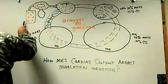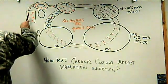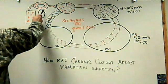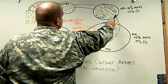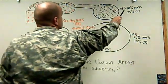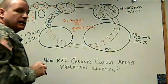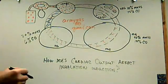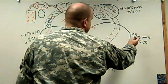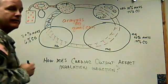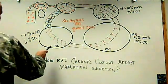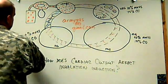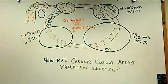Here you can see you have a vaporizer with gas in it, a circle system, the lungs, the vessel-rich group which composes 10% of the body mass and 75% of the cardiac output runs through it, the muscle group which composes 50% of the mass and 19% of the cardiac output runs through it, and the fat group which represents 20% of the mass and 6% of the cardiac output runs through it.